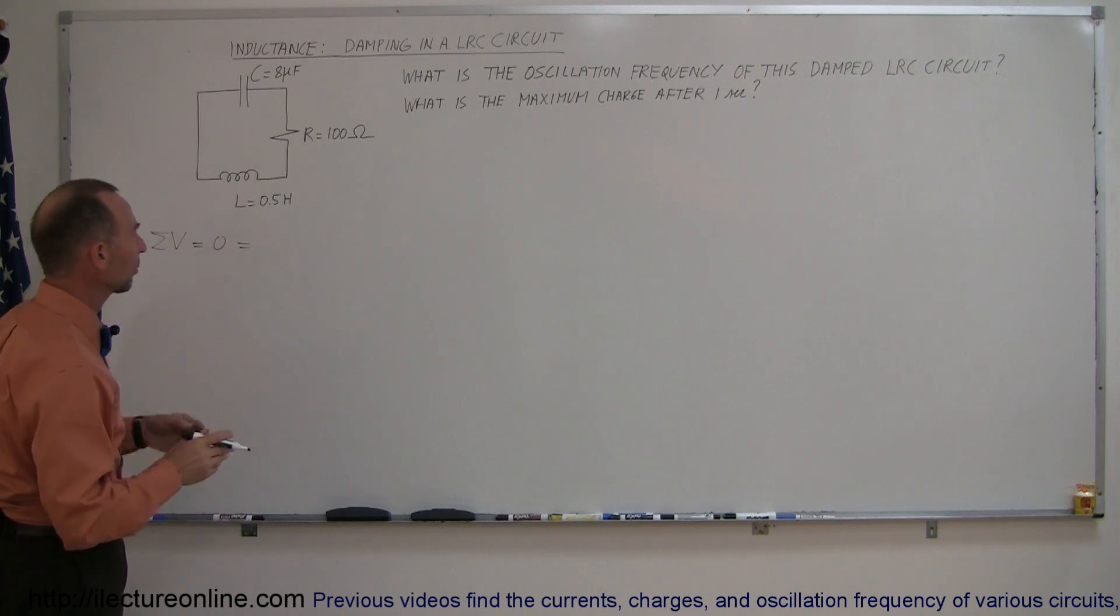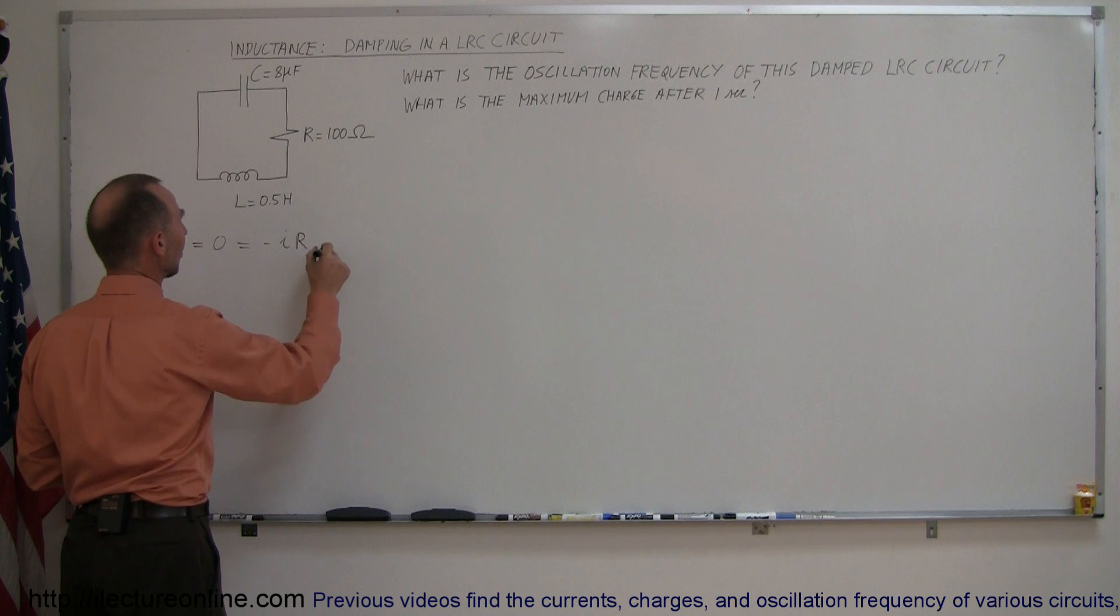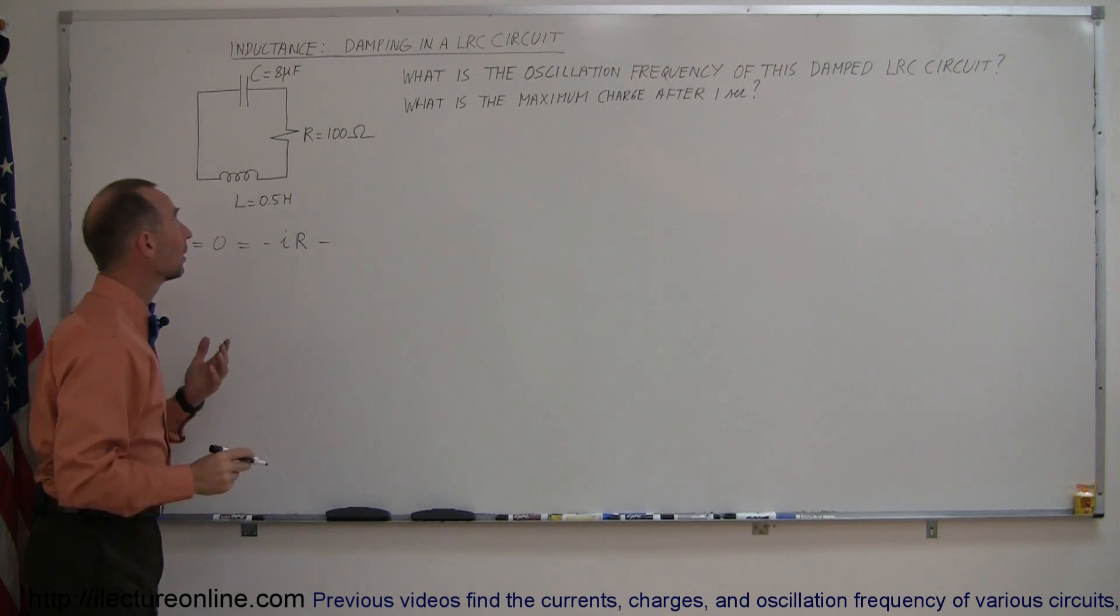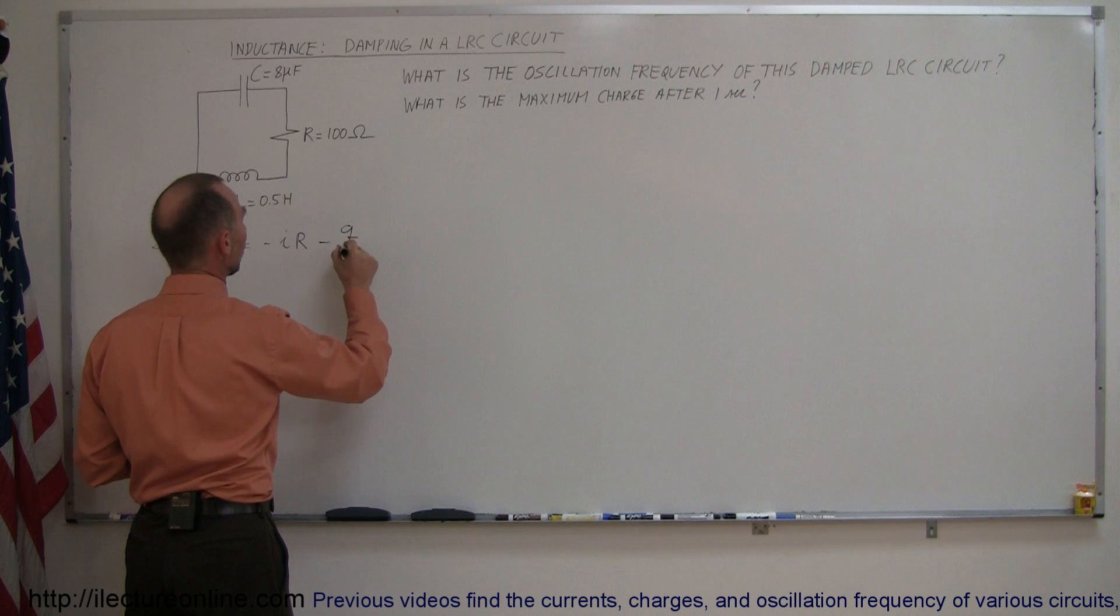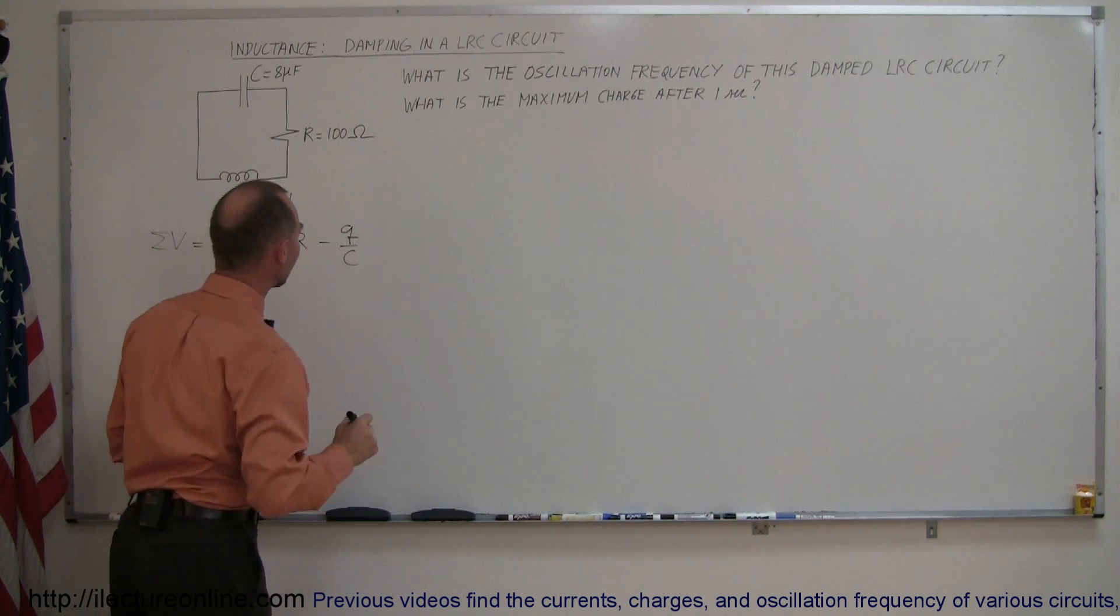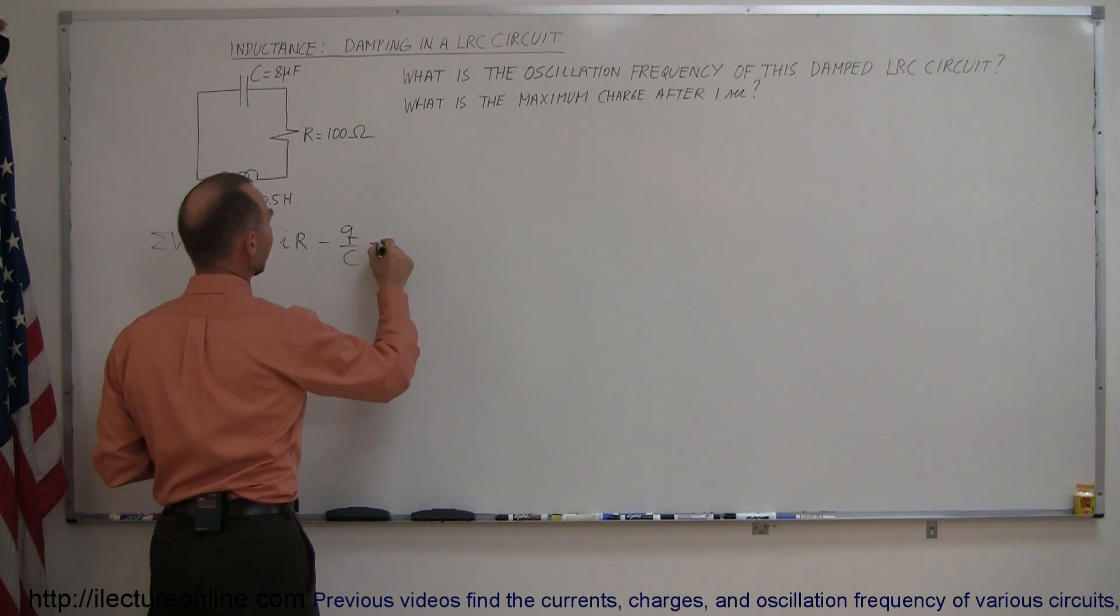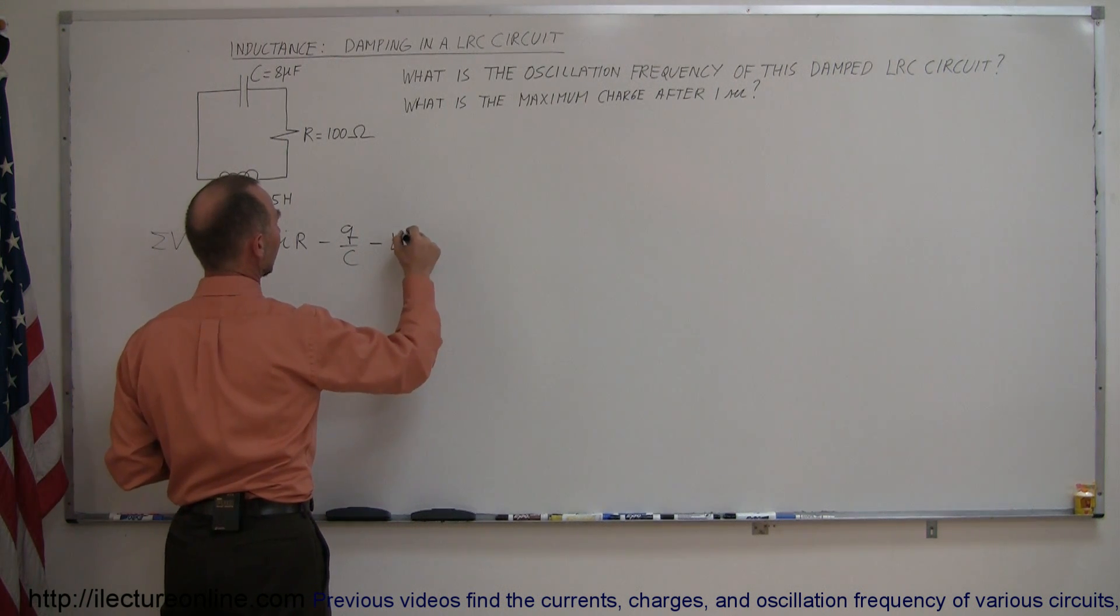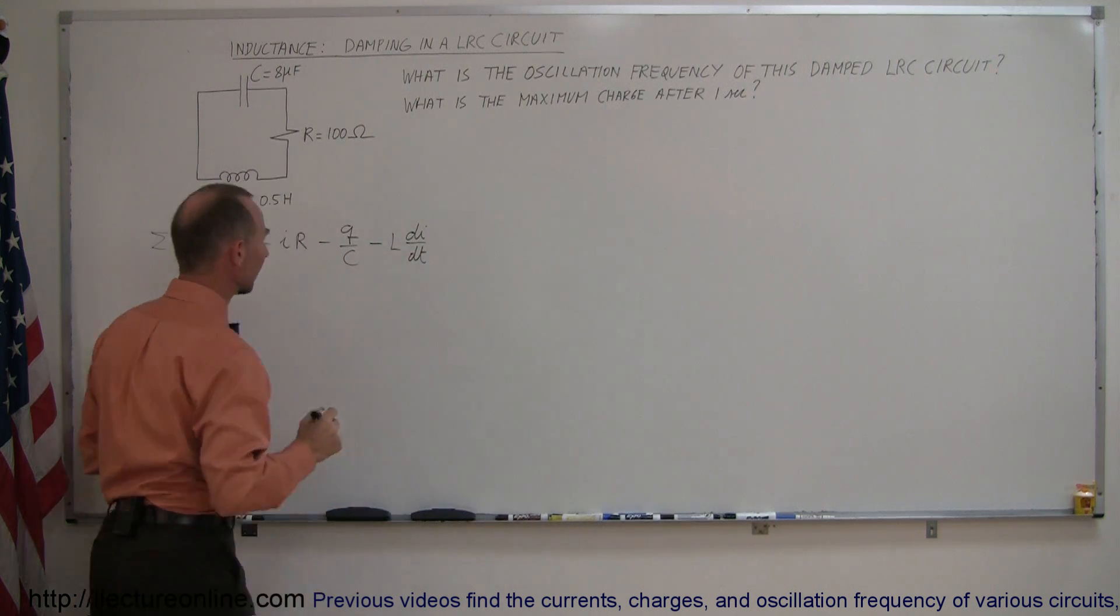So first of all the voltage drop across the resistor is going to be minus the current times the resistance. The voltage drop across the capacitor is going to be minus Q over C and finally the voltage drop across the inductor is going to be minus L times dI/dt like so.